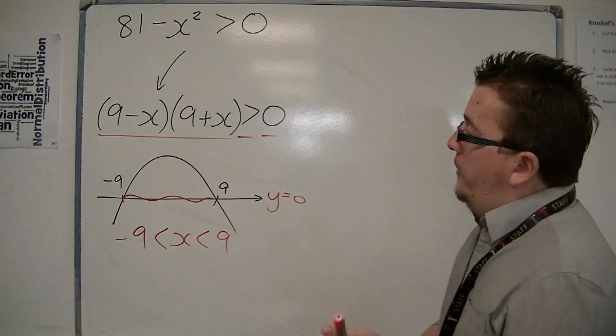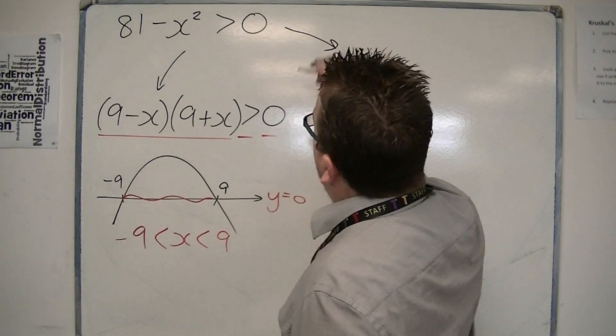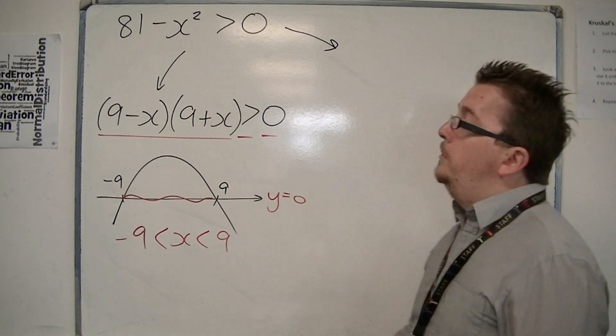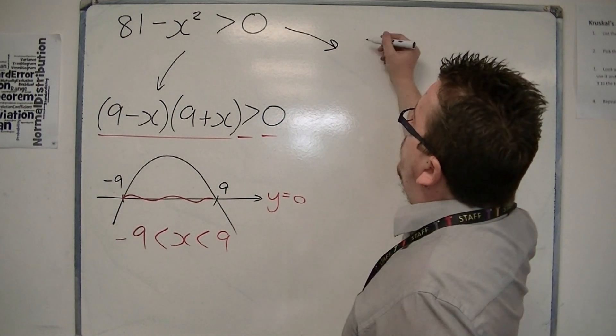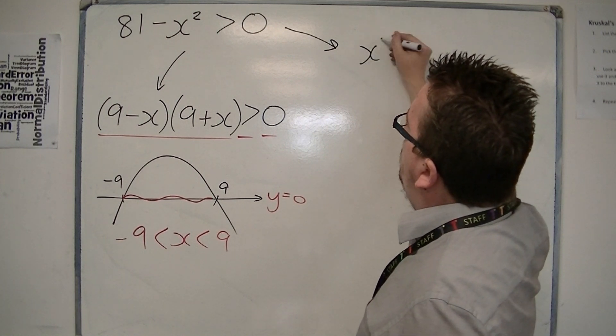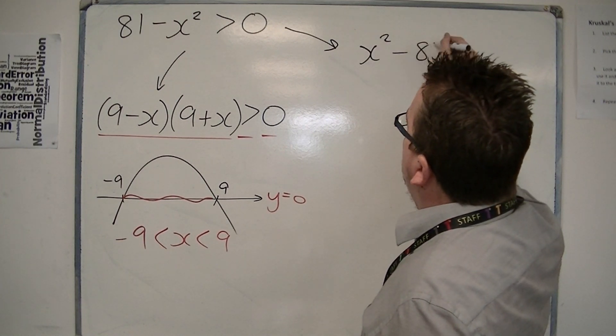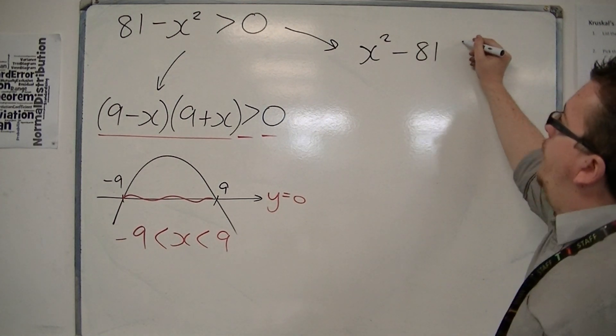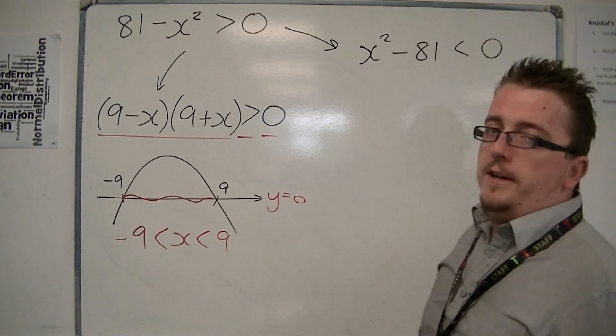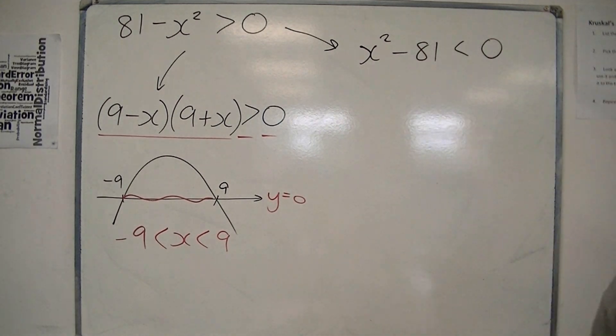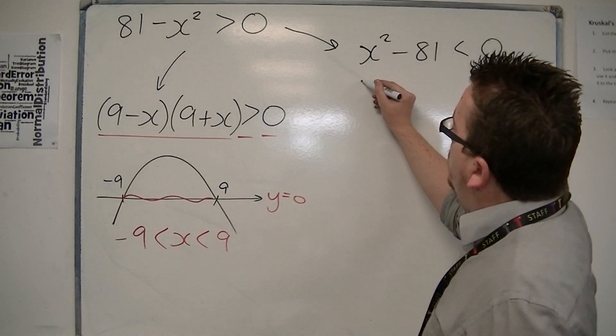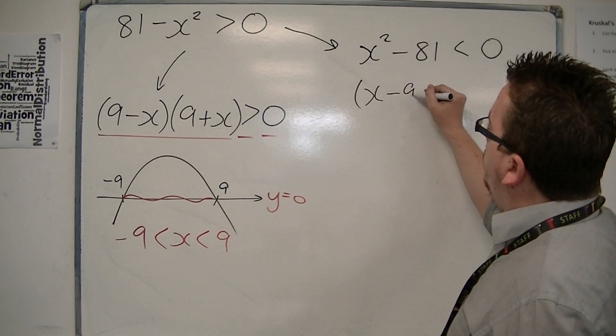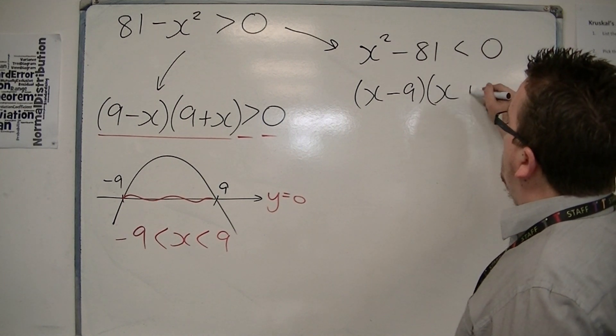Your other method, which you might find more preferable, is by multiplying through by minus 1. And you can rewrite this as, now, positive x squared, negative 81, is now less than 0. Now this inequality, on the left-hand side, factorises using the difference of two squares as x minus 9 and x plus 9.